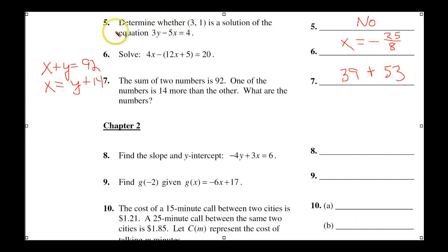Number 5, if you substitute the 3 for the x here, and the 1 for the y. 3 times 1 is 3, minus 15, does that equal 4? No. So that's not a solution.